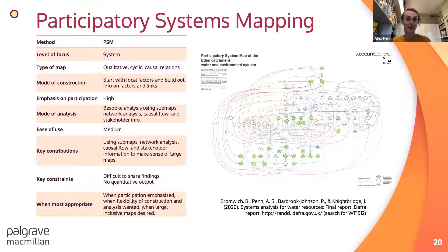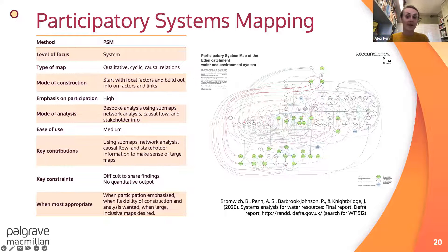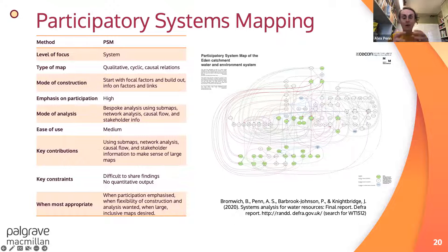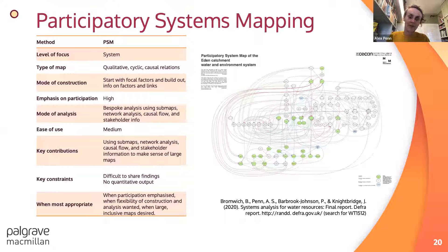Participatory systems mapping is the method that Pete and I have developed over years and used widely in SECAN. It's really about bringing everything in — we build very big maps with factors and interconnections, where the factors can be anything: qualitative, quantitative, anything that stakeholders think matters in the system. These very large maps, always built together with people, can be difficult to interpret if you weren't part of the process, so we break them down with network analysis, pulling out sub-maps and causal chains. The analysis is bespoke and aims to answer relevant stakeholder questions, often through a co-designed analysis process.